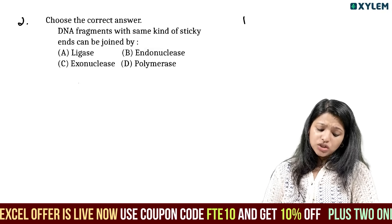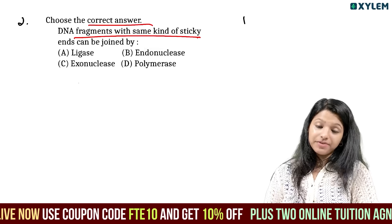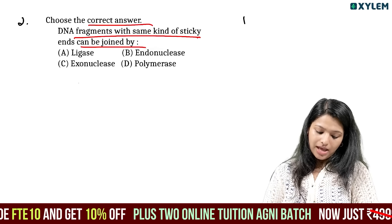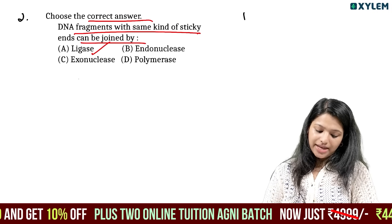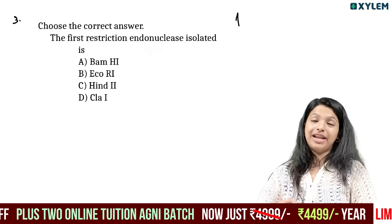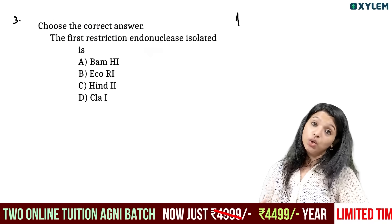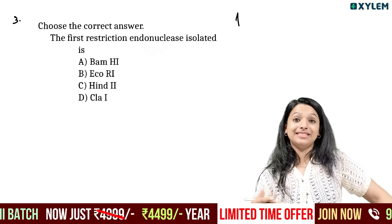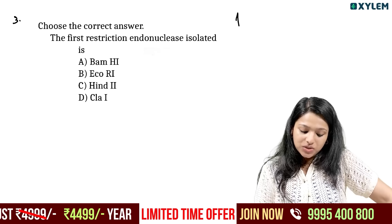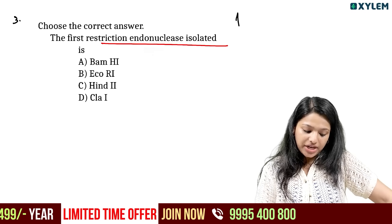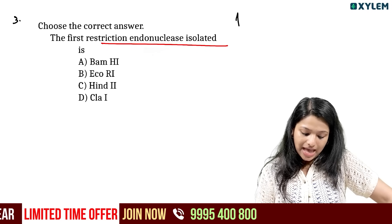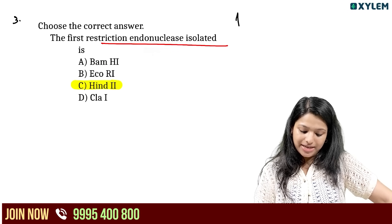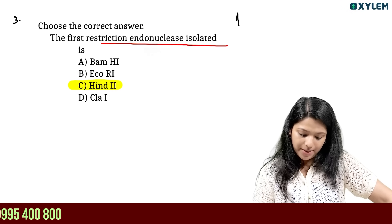Choose the correct answer: DNA fragments with the same kind of sticky ends can be joined by DNA ligase enzyme — the molecular glue. Molecular scissors refers to restriction endonuclease. Choose the correct answer: the first restriction endonuclease isolated was from Haemophilus influenzae.